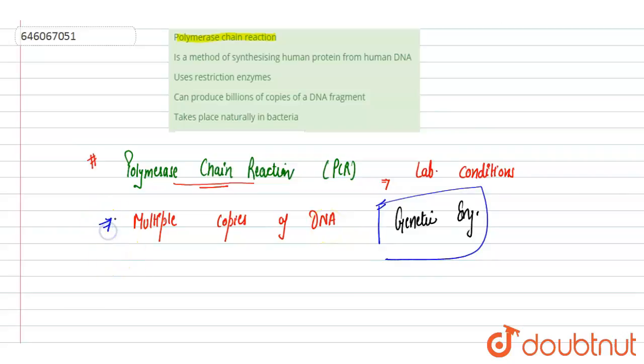So option A: it is a method of synthesizing human protein from human DNA - this is incorrect. This is simply a method for making multiple copies of DNA.